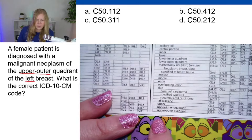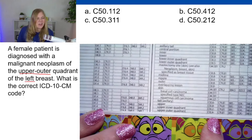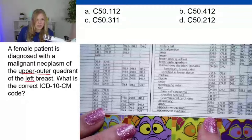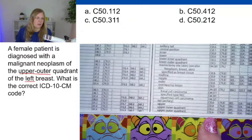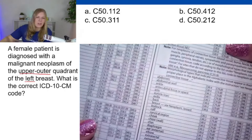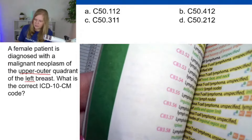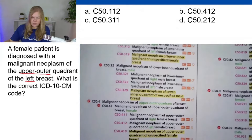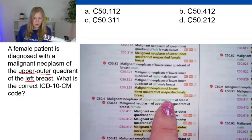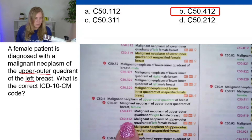Looking at C50.4, that dash means we need additional characters, but option B is our only choice that has a .4. You might want to verify it in the tabular — that's fine — but if you're confident, you can take that small risk. Looking at the tabular, malignant neoplasm upper outer quadrant of breast, left female, is C50.412, which is our answer B.